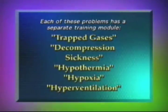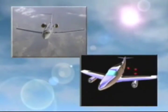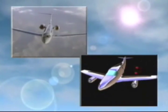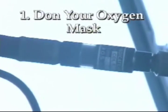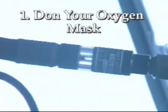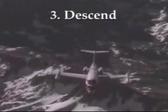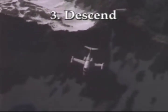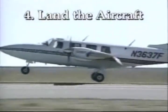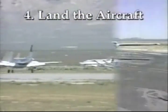Each of these problems has a separate training module available for further explanation. If you experience a decompression, you should use the following procedures. One: don your oxygen mask — you should be able to do this in 5 seconds or less, and check to make sure air is flowing at 100% in your mask. Two: maintain aircraft control. Three: descend to a lower altitude, preferably 10,000 feet or below. Four: land the aircraft as soon as possible and, if needed, obtain appropriate medical help from someone familiar with aviation physiology.